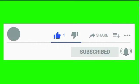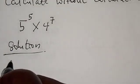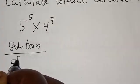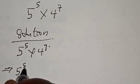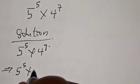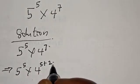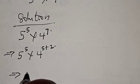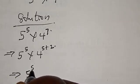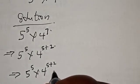Solution: we have 5 raised to power 5 multiplied by 4 raised to power 7. This can be expressed as 5 raised to power 5 multiplied by 4 raised to power 5 plus 2, since 5 plus 2 equals 7. So this implies that we have 5 raised to power 5 multiplied by 4 raised to power (5 plus 2).